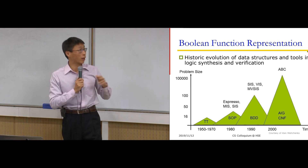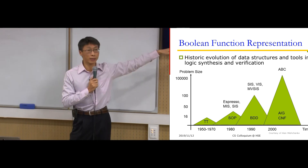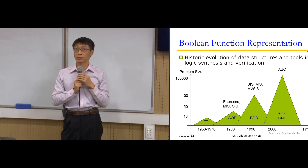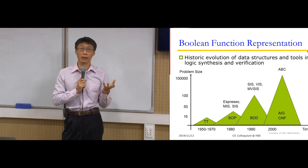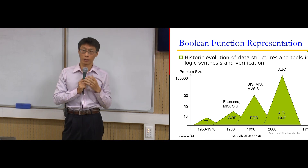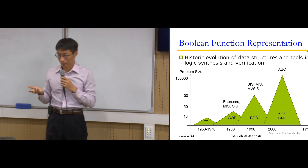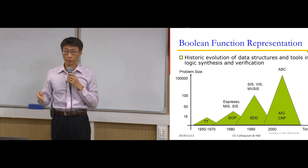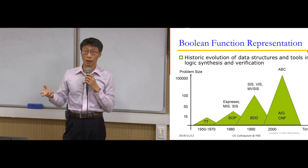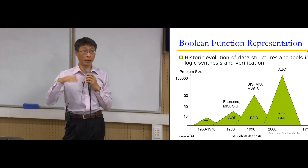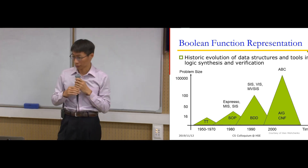You can see the migration of different data structures. Currently the most efficient approaches — if you use some Boolean reasoning tool — would use CNF or AIG as the underlying data structure.